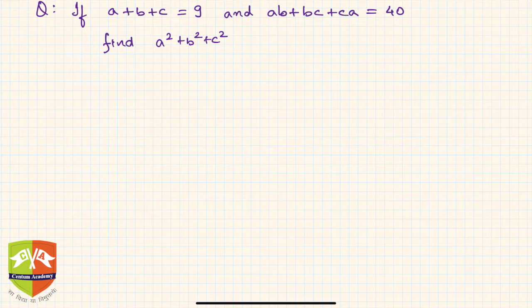Hello friends, in this question we have been given that a plus b plus c is 9 and ab plus bc plus ca is equal to 40.